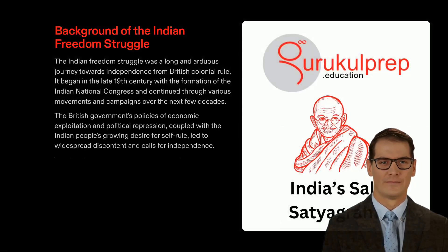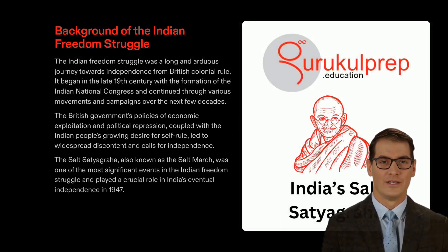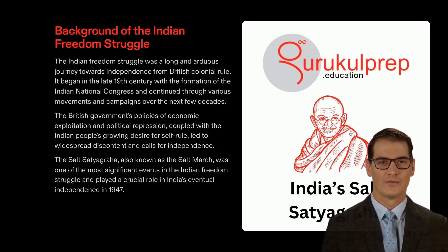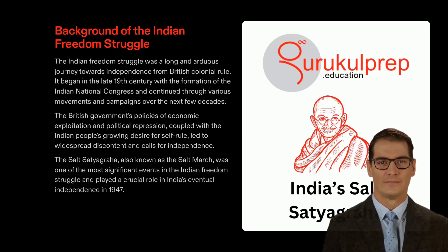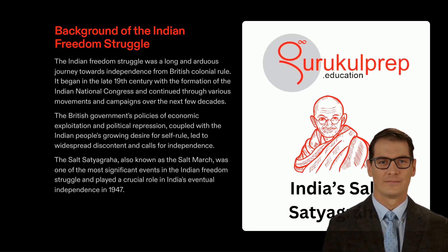Over a century ago, in the late 19th century, the people of India were under the oppressive rule of the British colonizers. Economic exploitation and political oppression persisted throughout the years, increasing the desire of the Indian people for freedom. In 1930, the Salt Satyagraha, also known as the Salt March, was held in opposition to the British rule of heavy taxation on salt. Led by Mahatma Gandhi and several hundred political activists, it was a peaceful protest that drew international attention. The march initiated a series of non-violent protests, eventually resulting in India's independence in 1947.